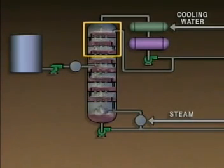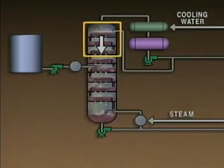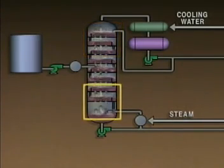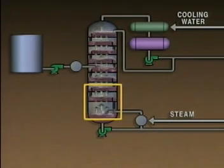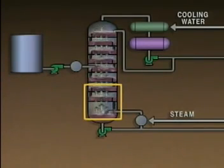On the other hand, if the temperature at the top of the tower is lower than it should be, less of the lighter components will vaporize. Some of the lighter components will remain as a liquid and flow down the tower. The temperature at the bottom of the tower is also important. The temperature at the bottom of the tower is usually slightly below the boiling point of the heavier component. If the temperature at the bottom of the tower is too high, more of the heavier components will vaporize and move up the tower instead of remaining as a liquid. If the temperature at the bottom of the tower is too low, less of the lighter components will vaporize and move up the tower.